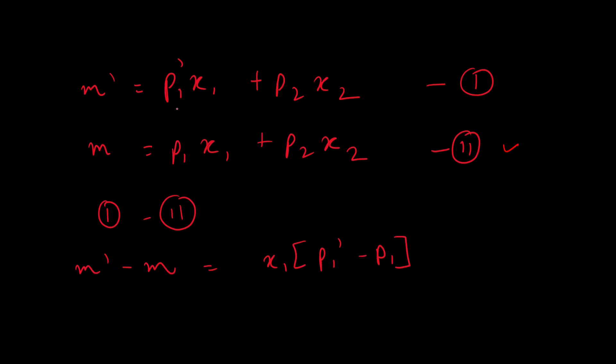But, different prices. So, P1 changes. So, it's P1 dash into X1 plus P2 X2. So, let's say you need M dash amount of money to afford the same bundle at new prices. And then, you can calculate the change in income required by doing M dash minus M, which gives you X1 into P1 dash minus P1.